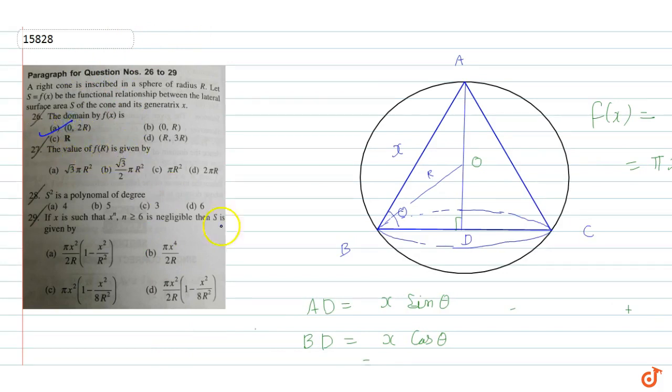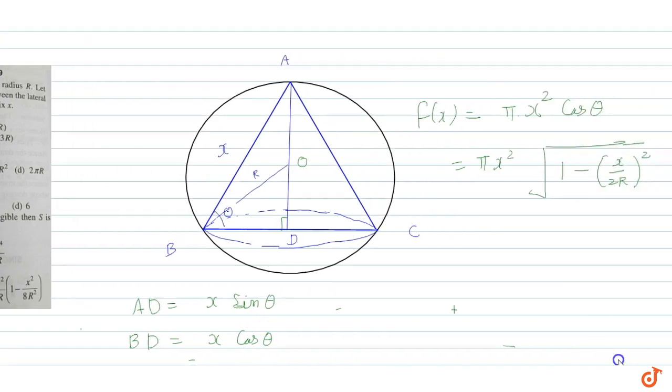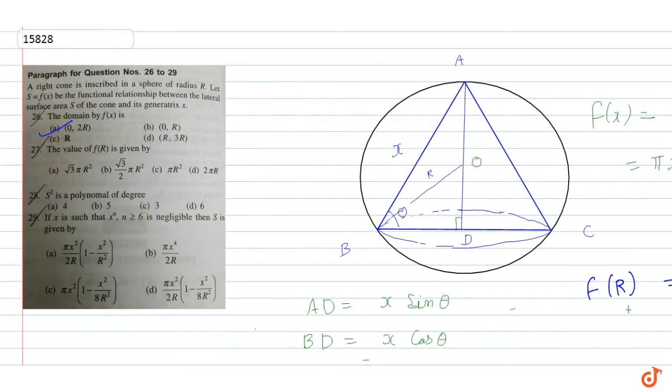The value of f(r) is: we have to put r in place of x. So f(r) equals pi r square into square root of 1 minus 1 by 4, which is root 3 by 2. So f(r) equals root 3 pi r square by 2. Option B is correct.